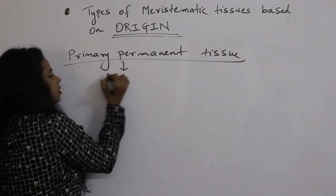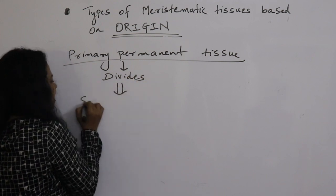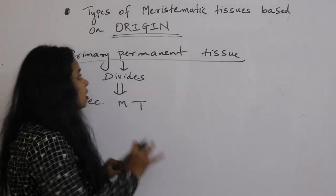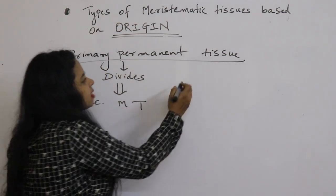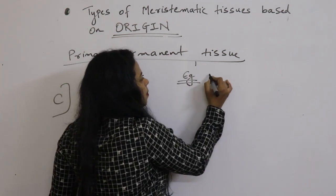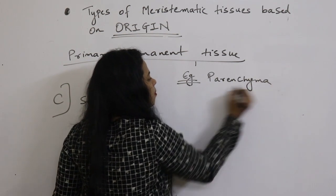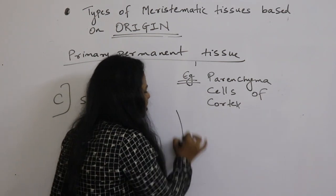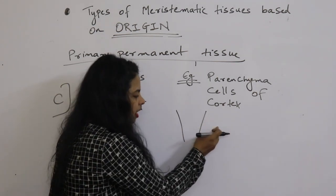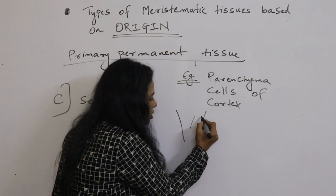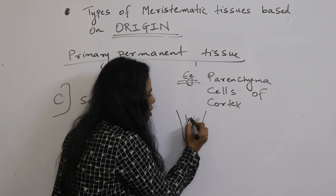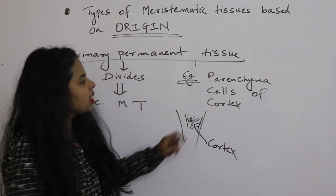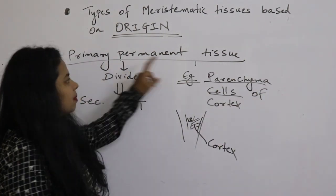Primary meristematic tissue divides to form secondary meristematic tissue, which is the third type. For the primary permanent tissue, we can consider the parenchyma cells of the cortex. In a root, you have root hair, epiblema, then exodermis, then cortex. Between the vascular bundles and exodermis you have the cortex, which is made up of parenchyma cells — a primary permanent tissue.